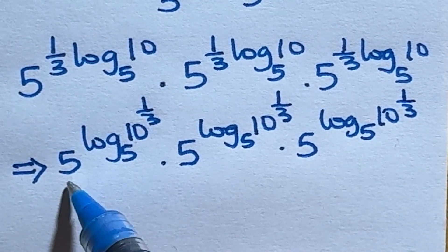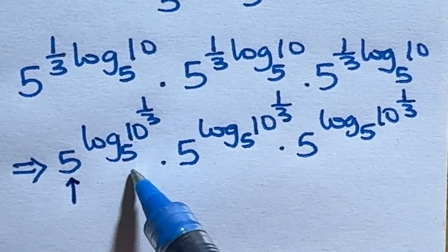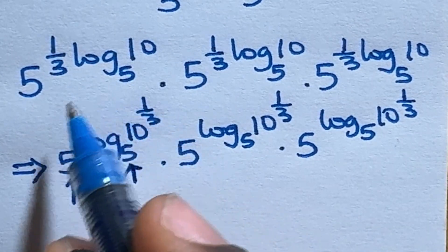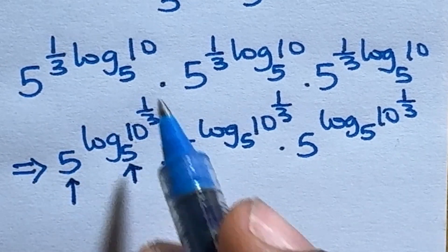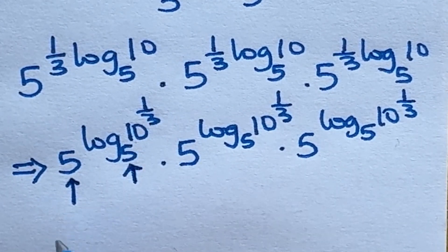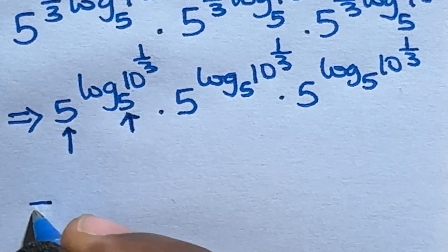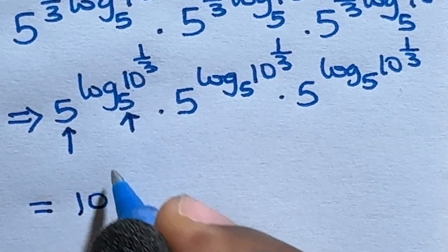And according to the logarithm property, as long as this number right here is the same as this number right here, the result of this first term here is 10 raised to power 1 over 3. So we have 10 raised to power 1 over 3.